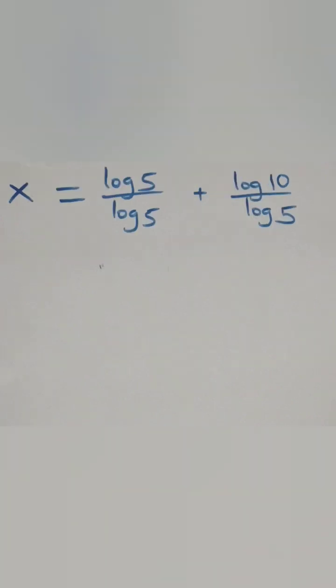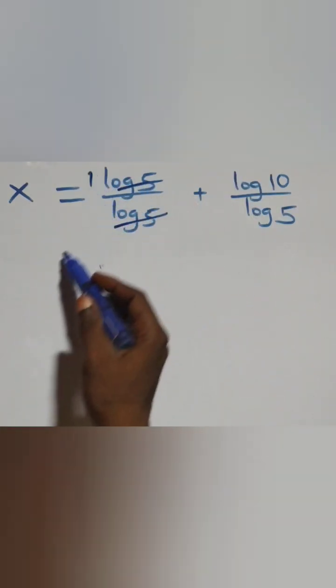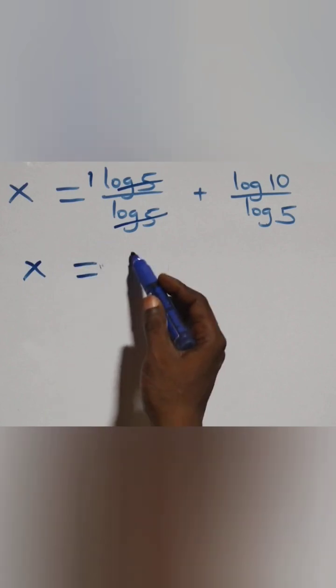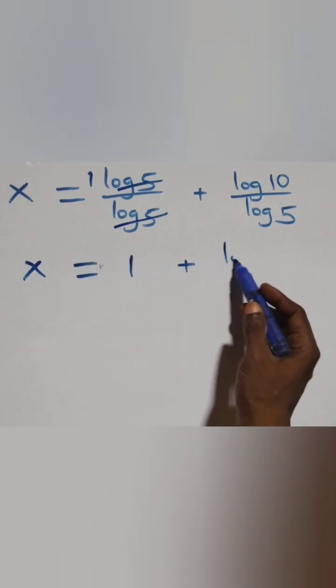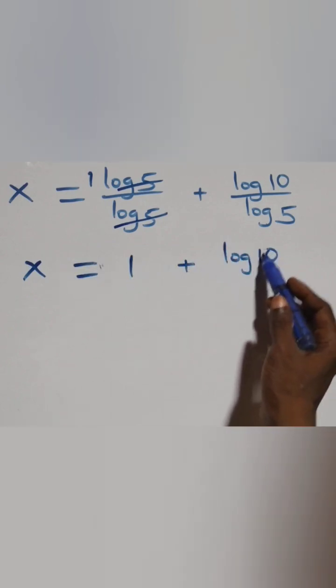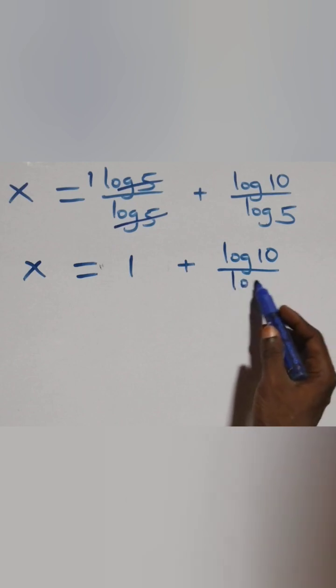Then, here log 5 counts each other. We have one left, which implies x equals to 1 plus log 5 times 2 over log 5.